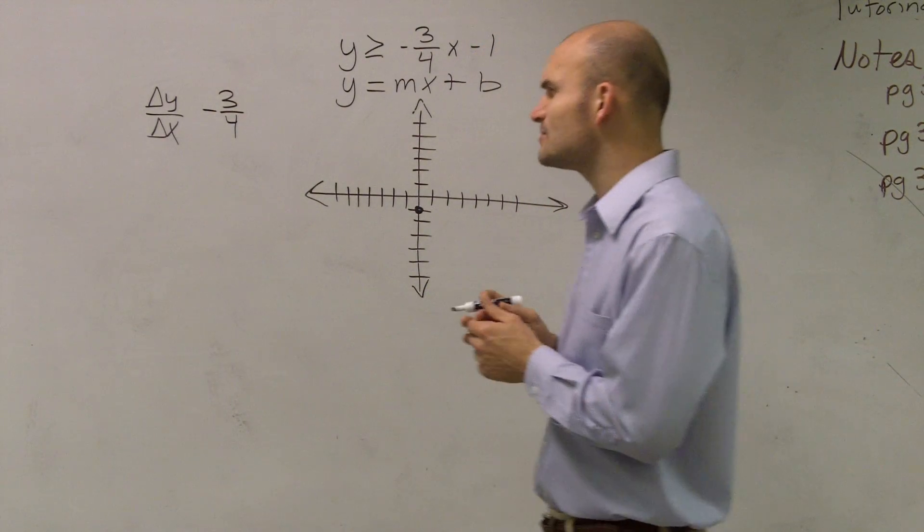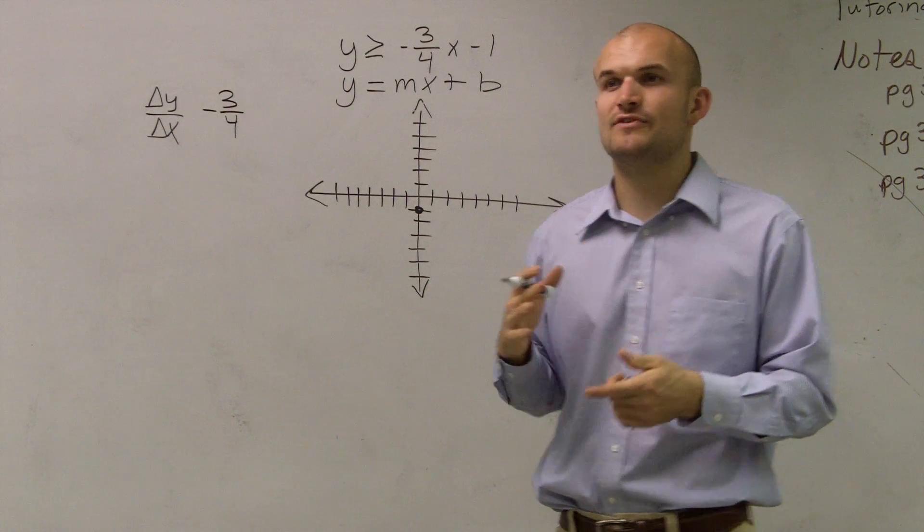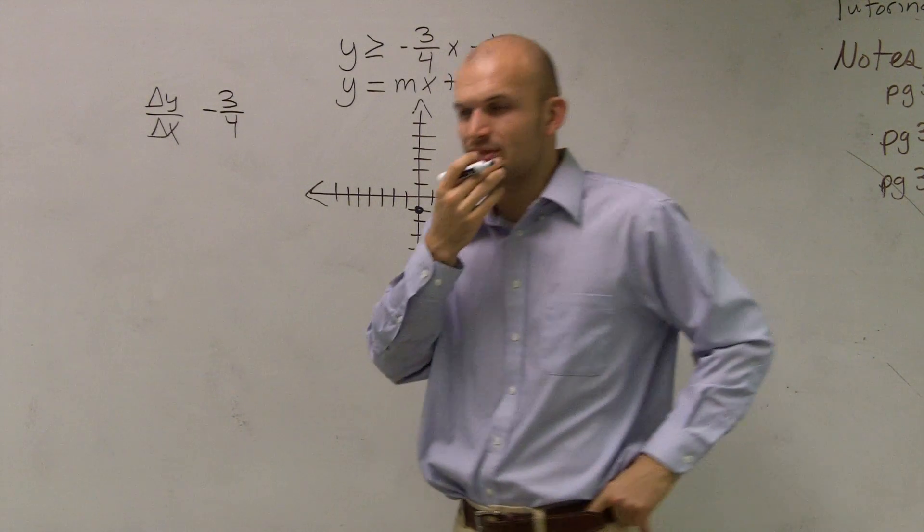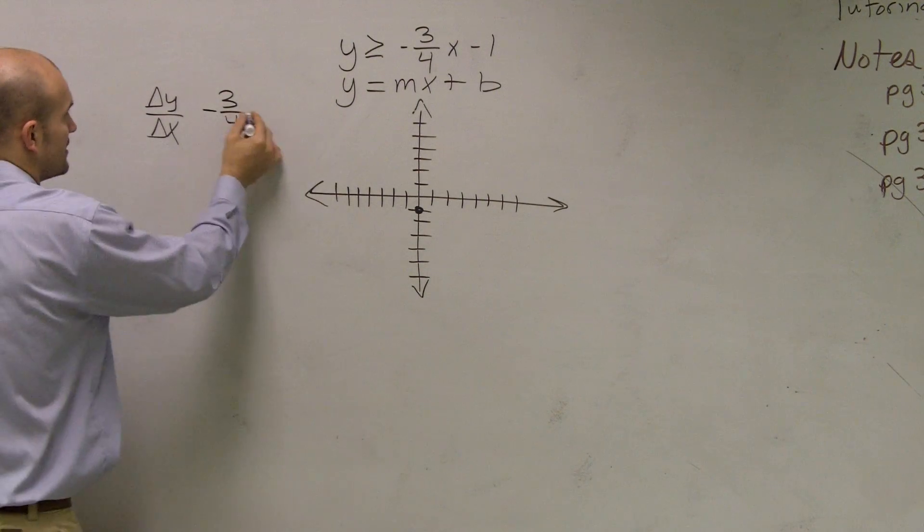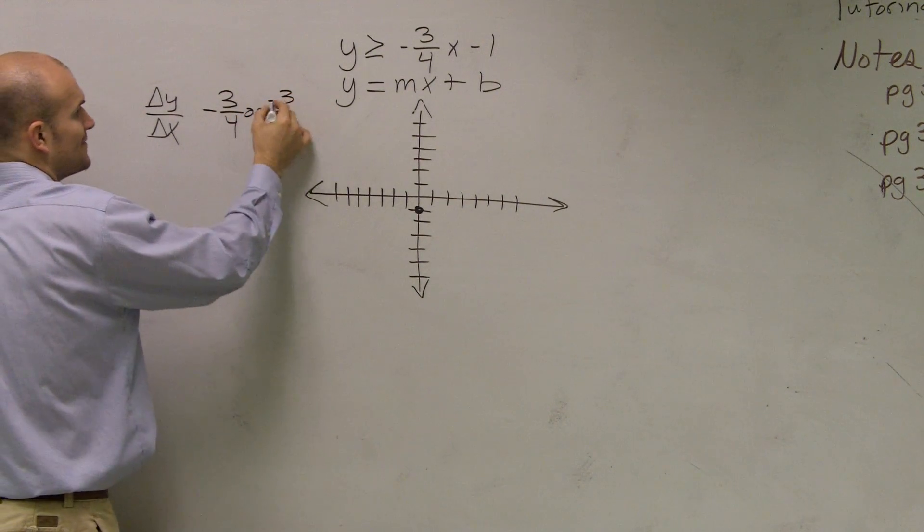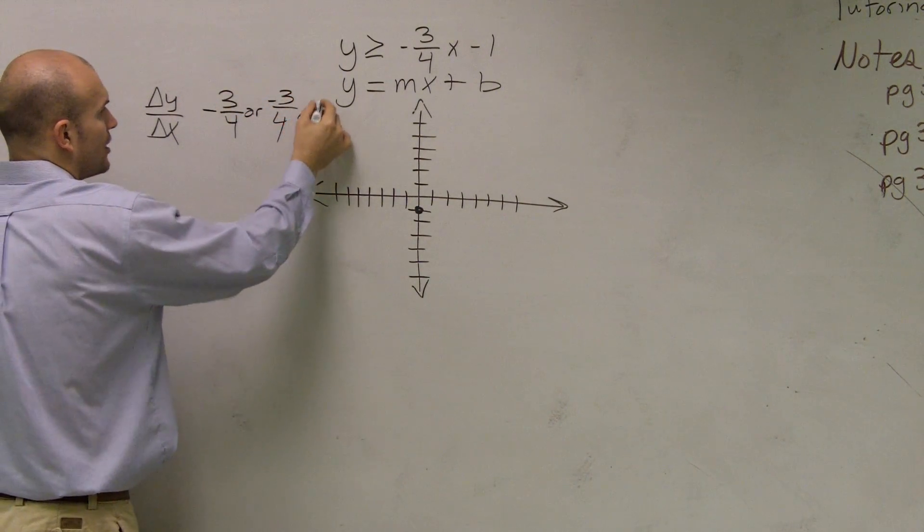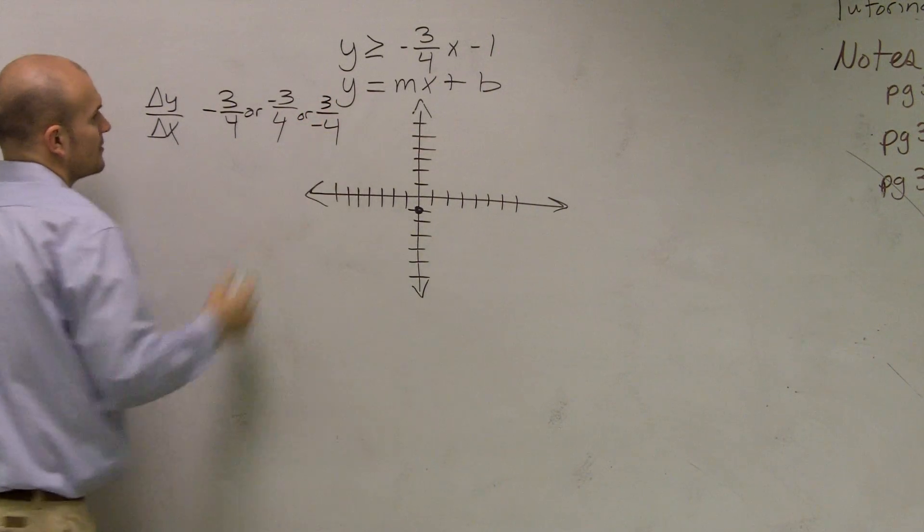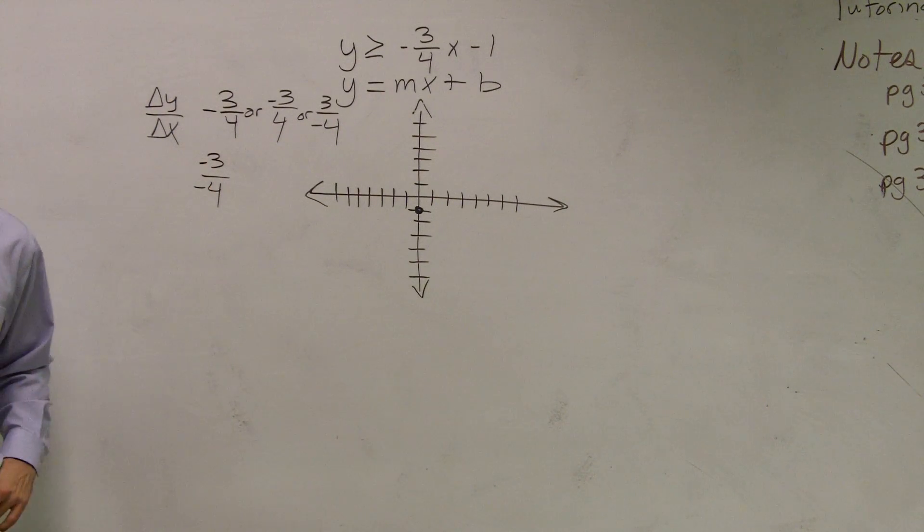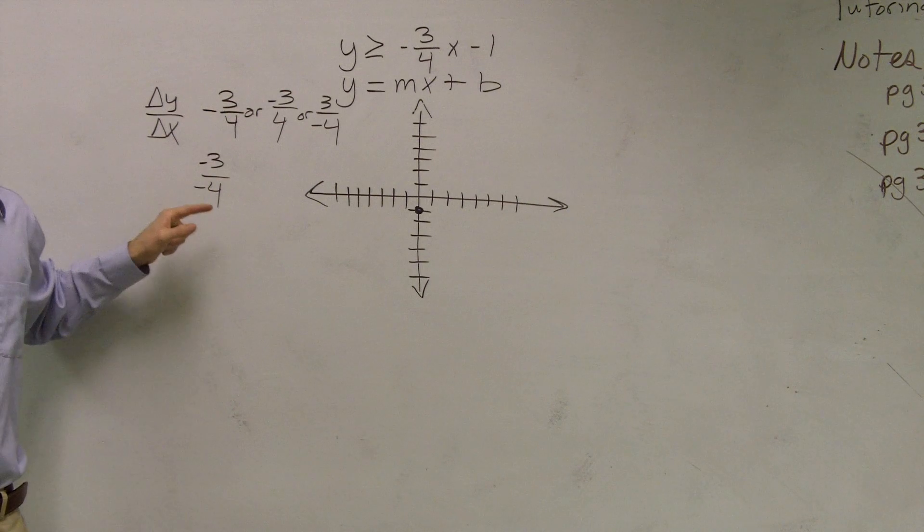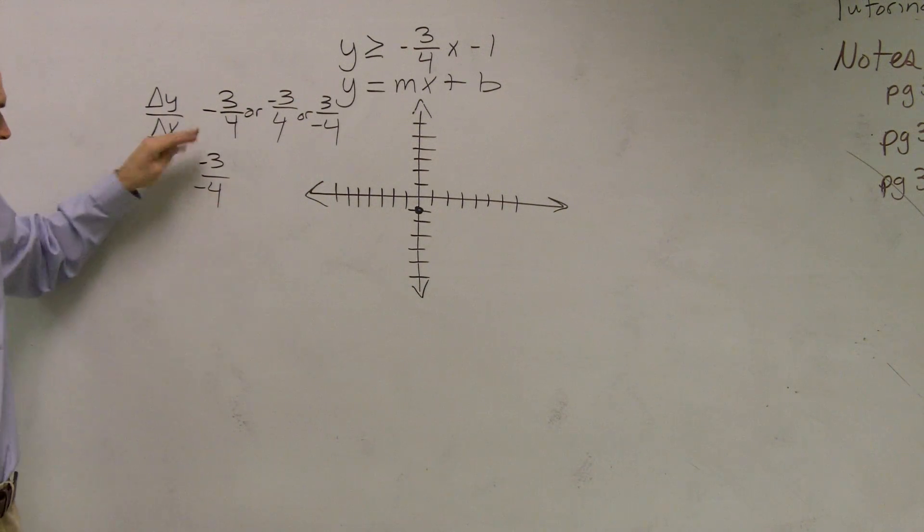Now what happens with this is a lot of students forget or they don't know what to do. Does the negative sign go up top or does it go in the bottom? Is negative 3/4 negative 3 over 4, or is it 3 over negative 4? And the one thing that we definitely know it can't be, because this would be wrong, but a lot of students try to do it, is they say I can make both of them negative. Because what's a negative divided by negative? Positive. So obviously you can't make both of those negative.